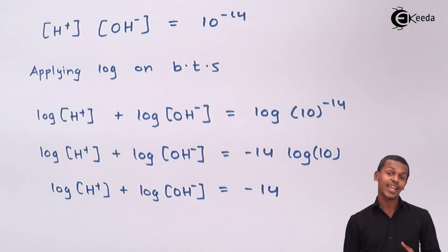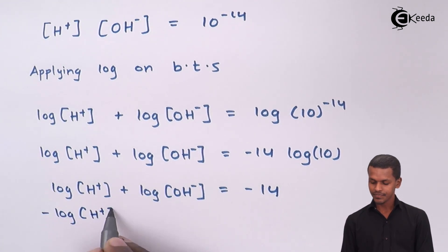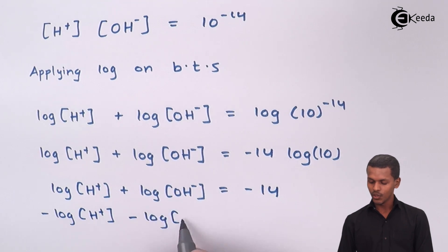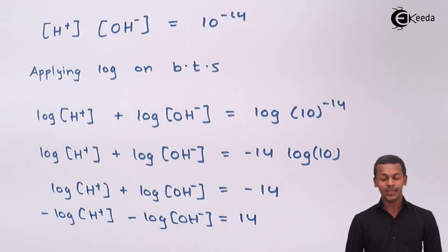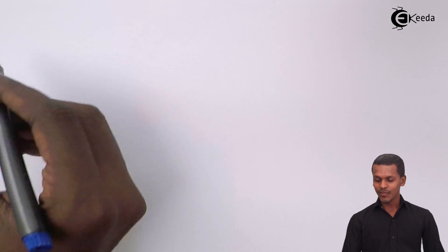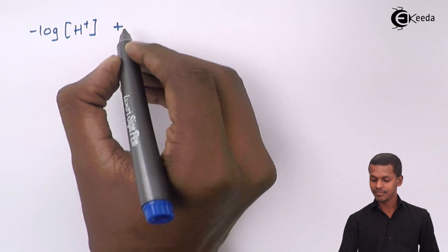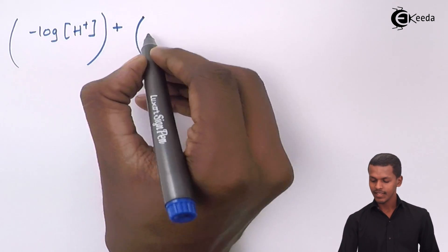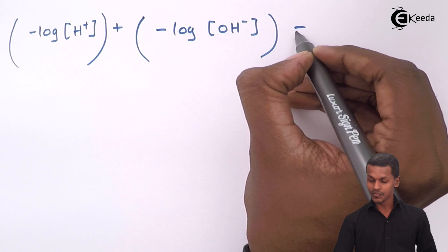Now we can also write this equation in another form by multiplying both sides by −1. If we do that, we get −log[H⁺] − log[OH⁻] = 14. So the above equation can be written as: −log[H⁺] + (−log[OH⁻]) = 14.